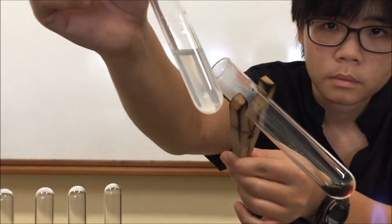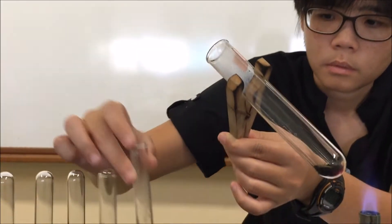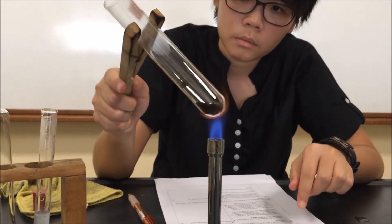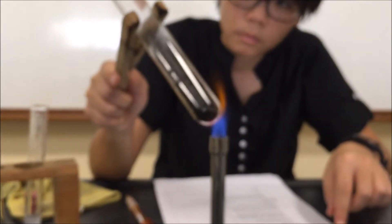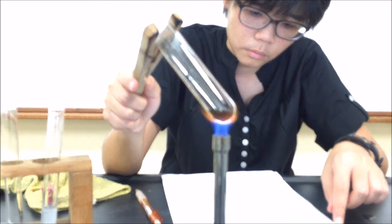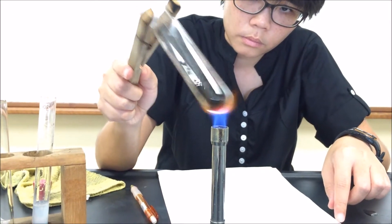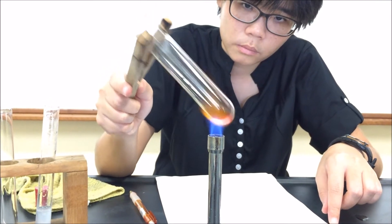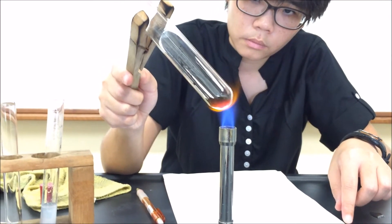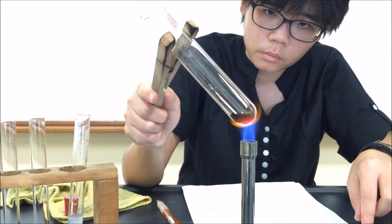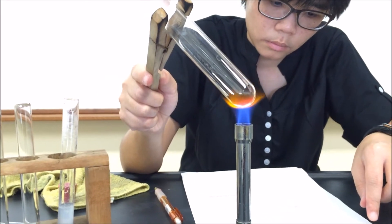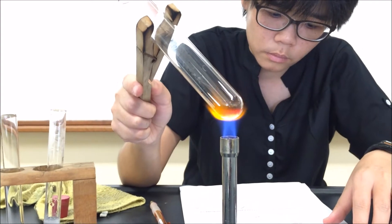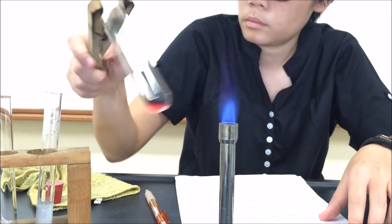So we see that the green solid has turned black. Because we will need to use the contents of this tube for the next part of the experiment, we need to ensure that the decomposition of this green solid is complete. Which is why I continue to heat the green solid for a while more, just to make sure the decomposition is complete, and then my results will be accurate.